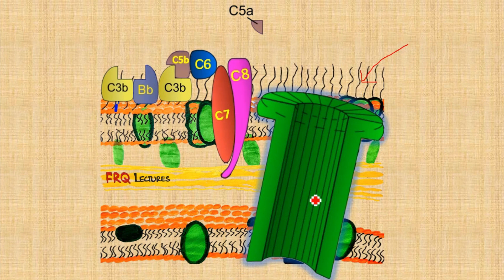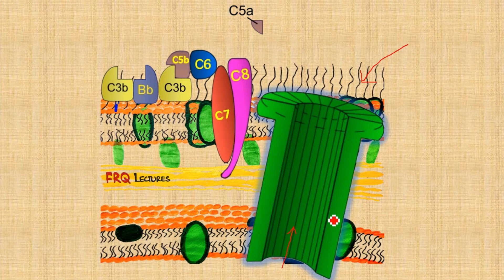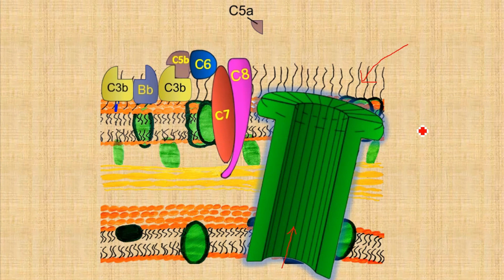C7 and C8 then recruit large numbers of C9, which polymerize together at the site to form a channel — a water channel, also called a pore or hole — within the bacterial membrane. This channel allows water and ions to move into the intracellular space of the bacterium. Water accumulates, creating pressure and osmotic imbalance, ultimately causing the bacterium to rupture and be eliminated.